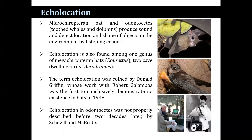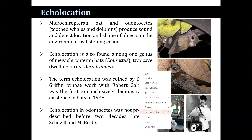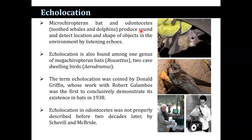The microchiropteran bats and the odontocetes, especially the toothed whales and dolphins, produce sound and detect the location and shape of objects in the environment by listening to the echoes. Echolocation is also found among one genus of megachiropteran bats. The term echolocation was coined by Donald Griffin, whose work with Robert Galambos was the first to conclusively demonstrate its existence in bats in 1938.